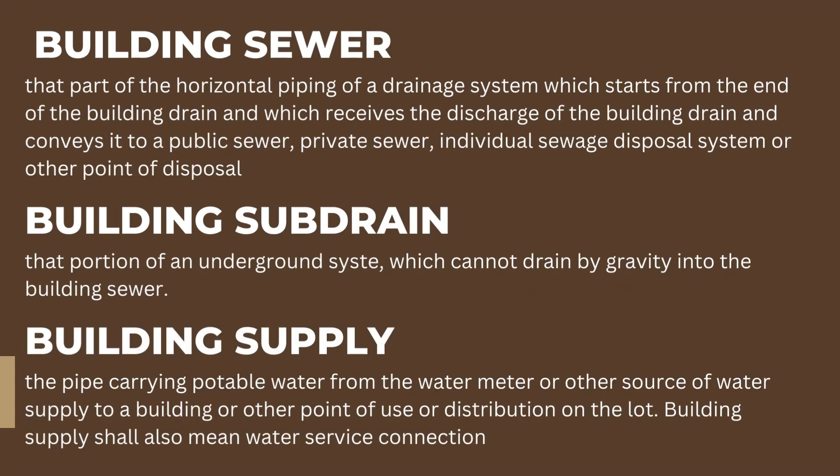Building sewer: that part of the horizontal piping of a drainage system which starts from the end of the building drain and conveys it to a public sewer, private sewer, individual sewage disposal system, or other point of disposal. Building subdrain: that portion of an underground system which cannot drain by gravity into the building sewer.